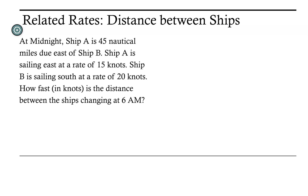Welcome. Let's take a look at a related rates problem investigating the distance between two ships at midnight. Ship A is 14 nautical miles due east of Ship B. Ship A is sailing east at a rate of 15 knots — a knot is one nautical mile per hour. Ship B is sailing south at a rate of 20 knots. How fast, in knots, is the distance between the ships changing at 6 AM?